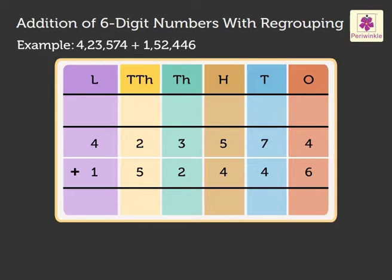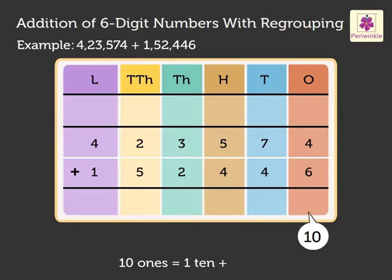First, we add 4 and 6 to get 10. Regroup the 10 ones to get 1 ten and 0 ones. Carry the 1 ten to the tens column and write 0 in the ones column.